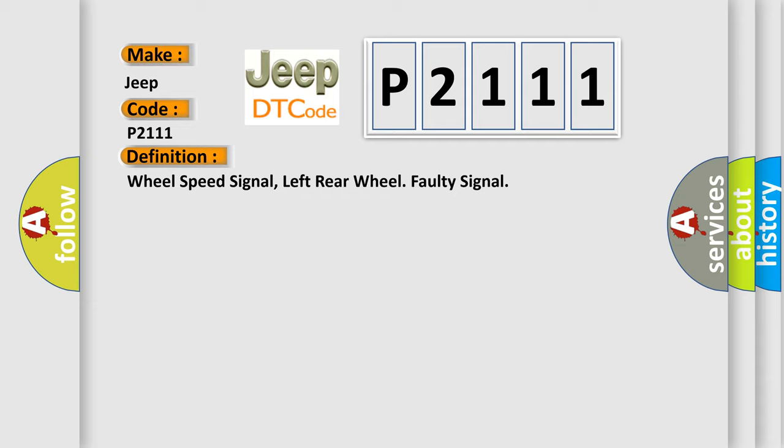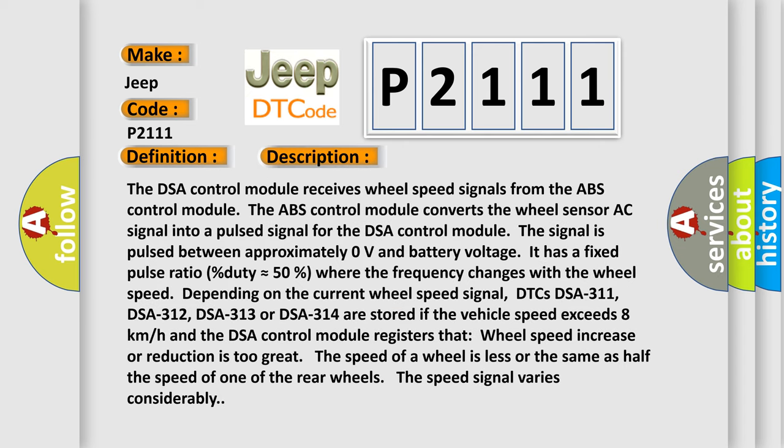And now this is a short description of this DTC code. The DSA control module receives wheel speed signals from the ABS control module. The ABS control module converts the wheel sensor AC signal into a pulsed signal for the DSA control module. The signal is pulsed between approximately zero volts and battery voltage. It has a fixed pulse ratio (duty approximately equals 50%) where the frequency changes with the wheel speed.